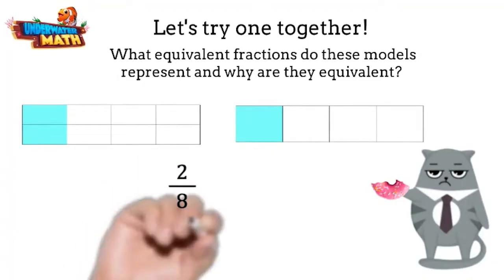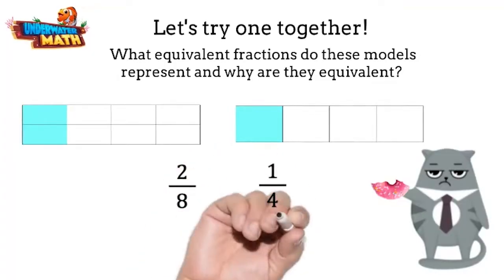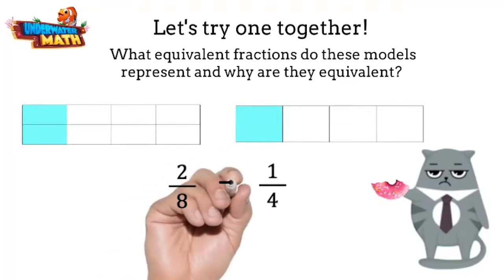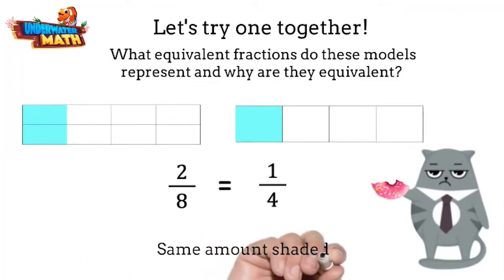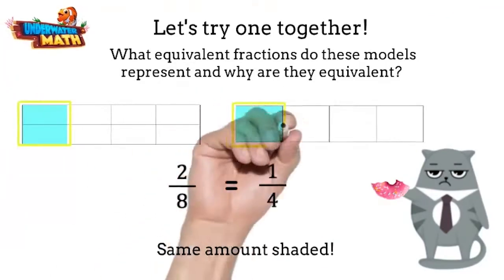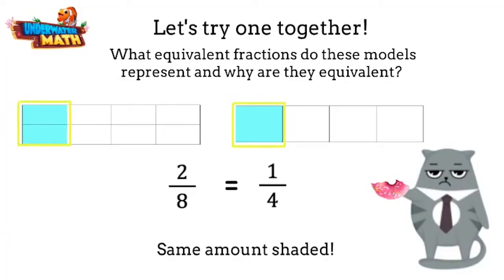The first model shows two eighths, the second one shows one fourth. Those are two different fractions. You are absolutely right, Grumpy Kitty. They are written differently, but they are equal because both models have the same amount of space shaded. I knew that.